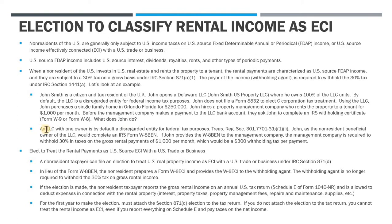The LLC with one owner is a disregarded entity for federal tax purposes. Because the entity is a disregarded entity, John as the non-resident owner needs to complete a Form W-8-BEN because he's an individual. A disregarded LLC owned by a foreign person does not complete a W-9 — they complete a W-8. So if John prepares a W-8-BEN and gives that to the management company, the management company is required to withhold 30% in tax on those gross rental payments. For every $1,000 John receives, the management company takes $300 out and sends that to the IRS.